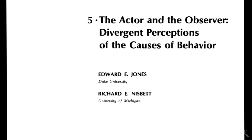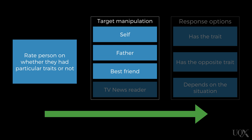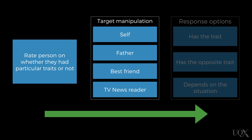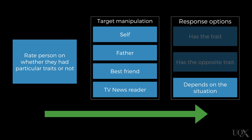Let's look at a study that tests this idea. In this study, participants were asked to rate themselves, their friend, and a TV newsreader on whether they possessed a number of different traits or not. For each trait, participants could say that the person possessed the trait, or that the person possessed the opposite trait — both of these are dispositional attributions because we would be saying that a person had a certain characteristic. Alternatively, participants could say that the person did not have either trait, and that the person's behaviour depended on the situation, which is a situational attribution.